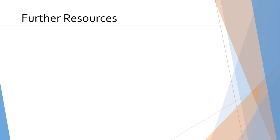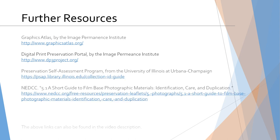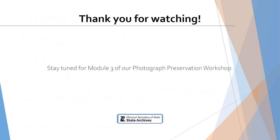There are many other methods of photography that we did not cover during this module. Here are some resources that have numerous types of photographs, reproduction prints, and film types to reference. These resources will also allow you to do in-depth comparisons into the different methods so you can more confidently identify your photograph. Thank you for watching and please stay tuned for Module 3 of our Photograph Preservation Workshop.